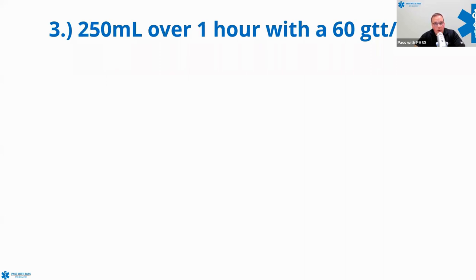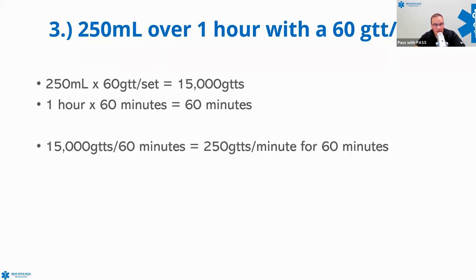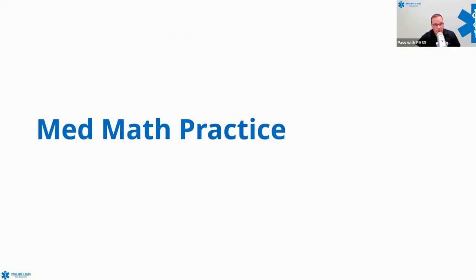Next: 250 milliliters over one hour with a 60-drop set. 250 times 60 gives me 15,000 drops. I need to give 15,000 drops over one hour, and one hour is 60 minutes. 15,000 drops over 60 minutes equals 250 drops per minute — impossible in practice, but that's what the math tells us.